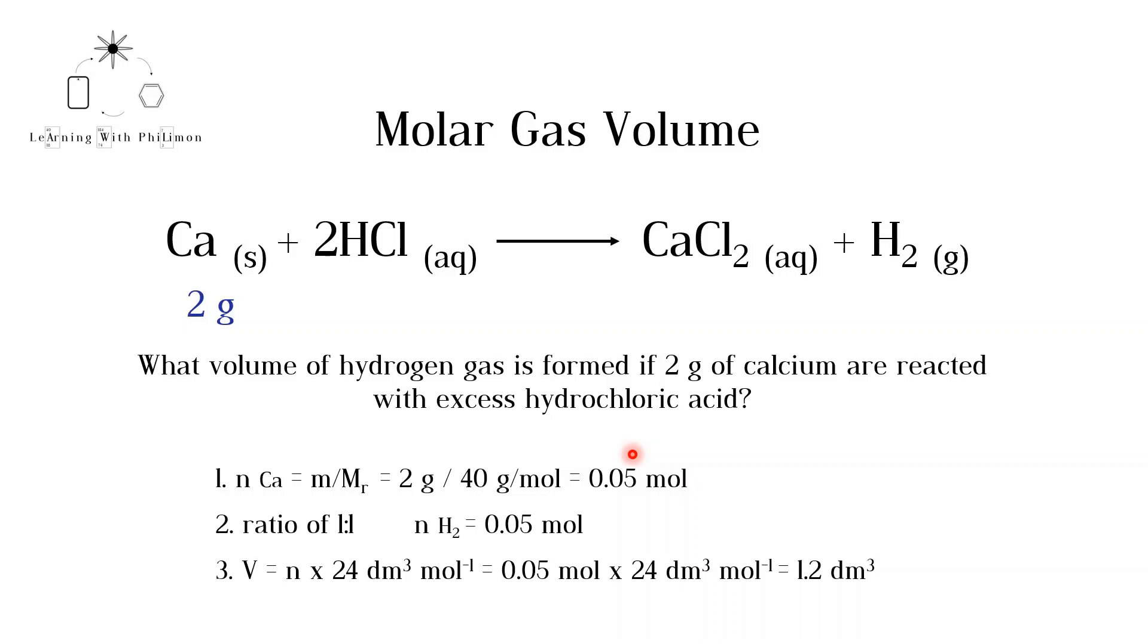The second step is to figure out the number of moles of hydrogen produced. As both calcium and hydrogen have a coefficient of 1, the ratio is 1 to 1. So 0.05 moles of calcium would form 0.05 moles of hydrogen.